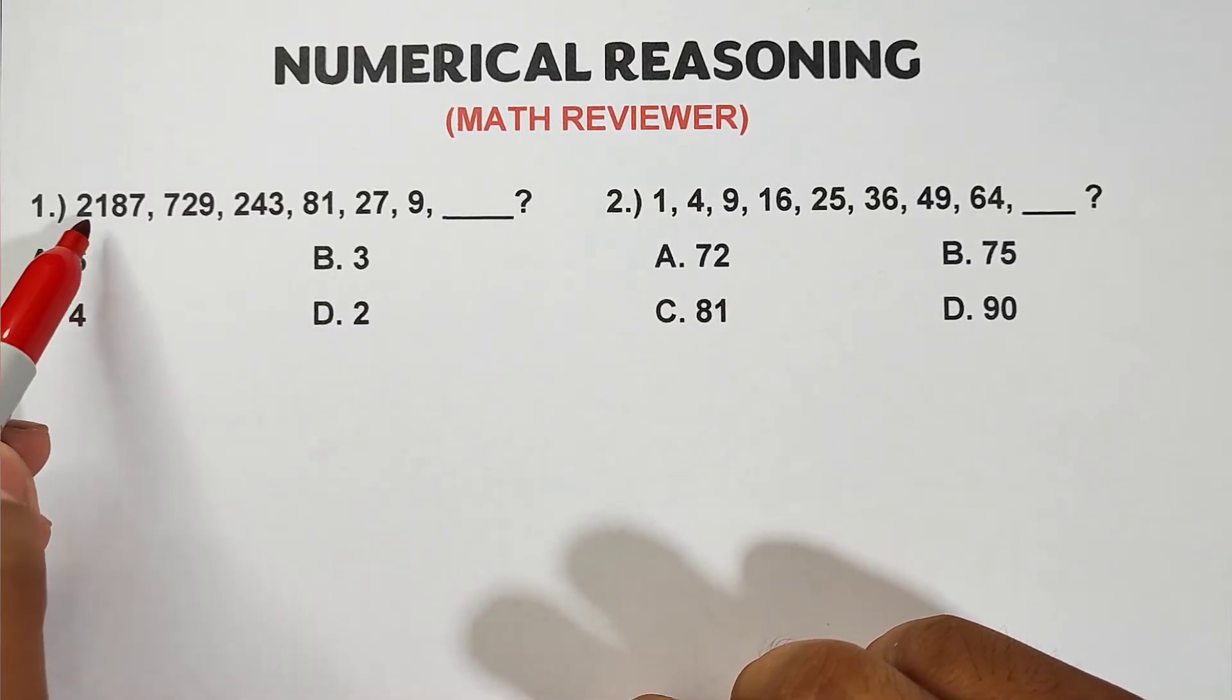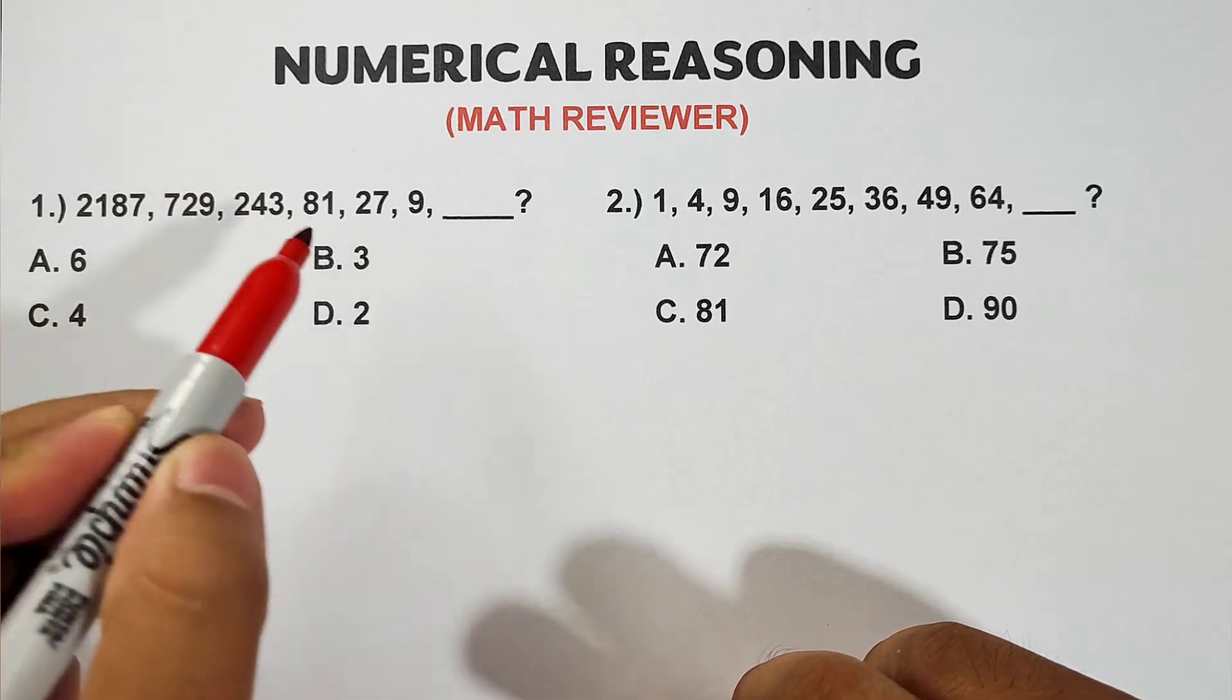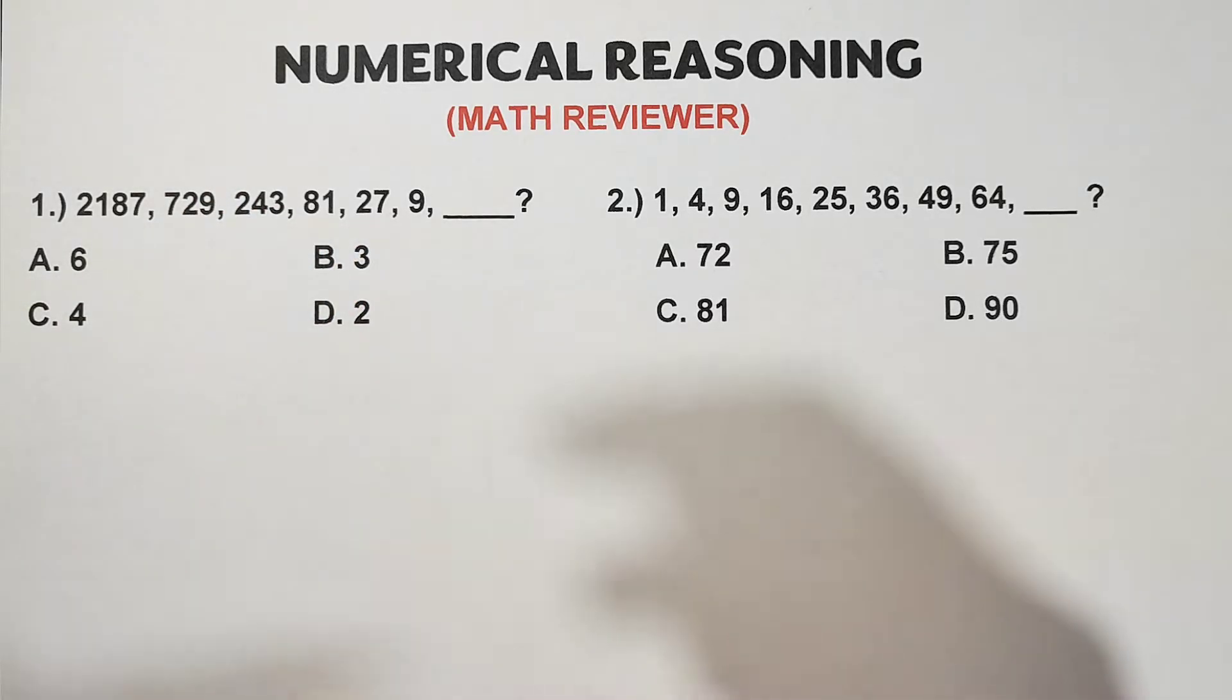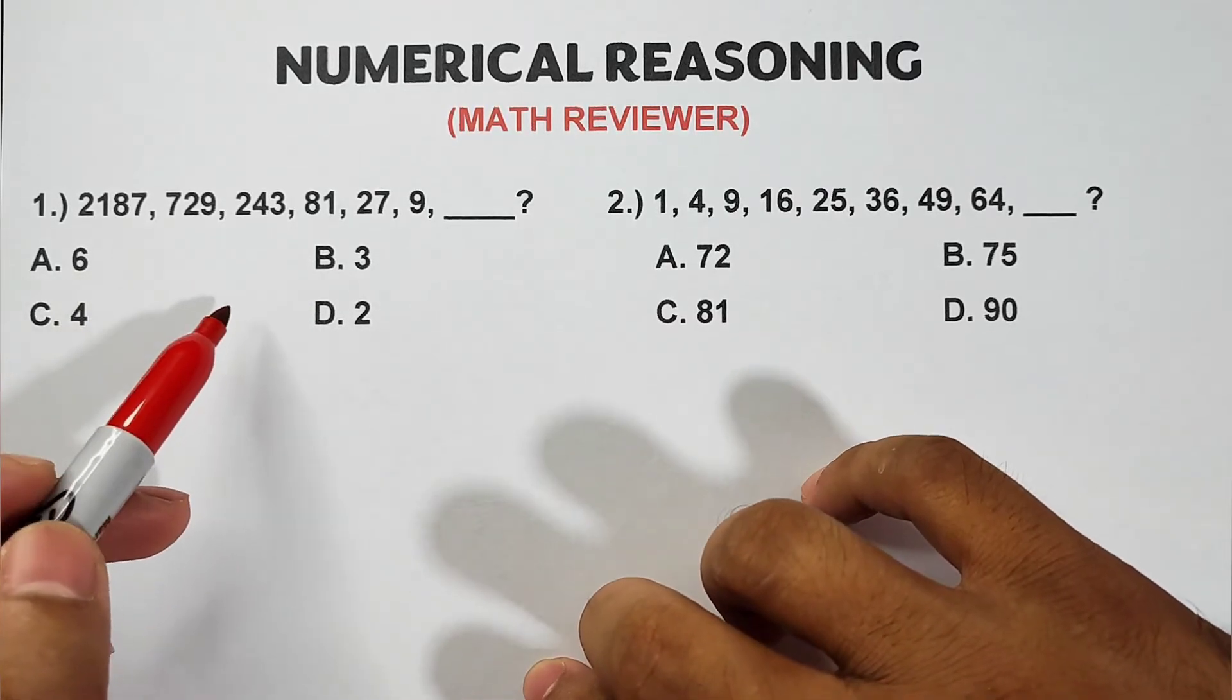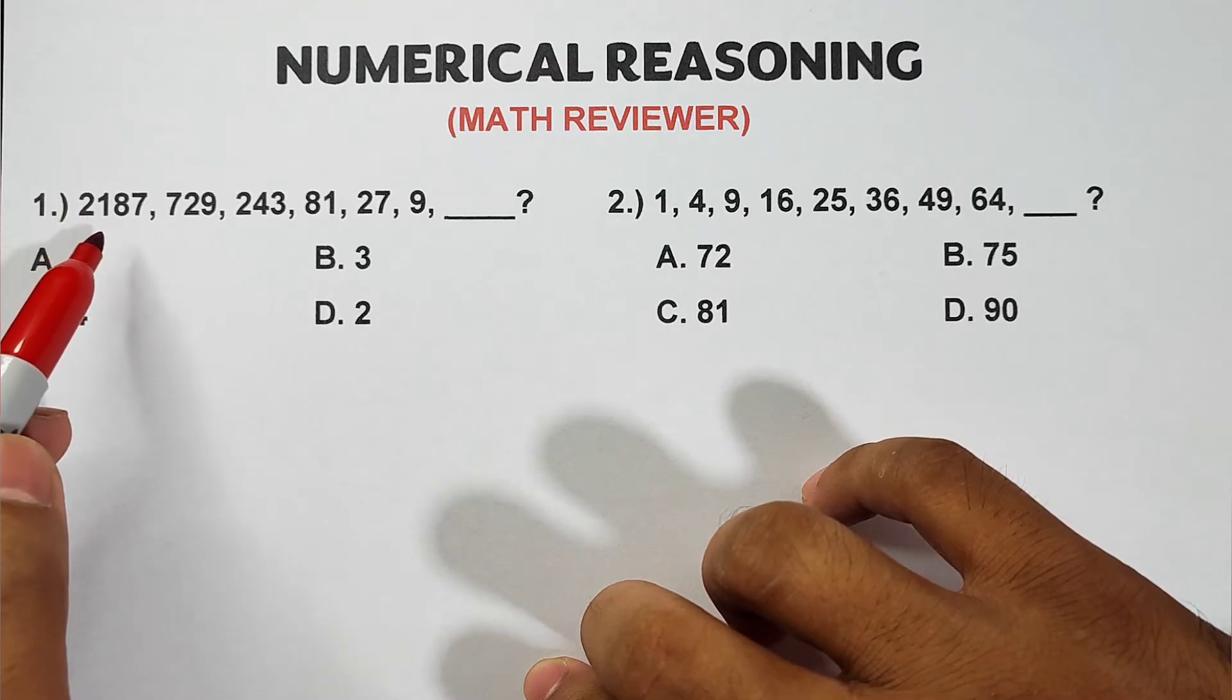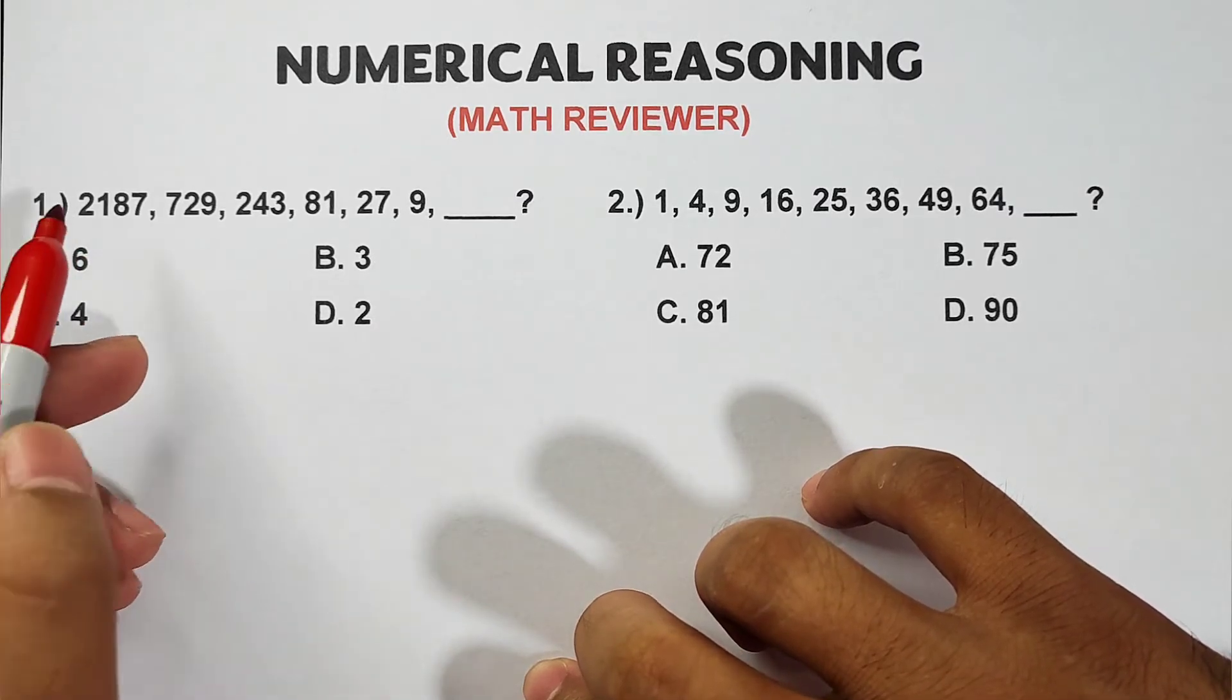Let's try number one. We are given this number series: 2187, 729, 243, 81, 27, and 9. Basically guys, in number series it's best if you know the different types of numbers like whole numbers, odd numbers, even numbers, perfect squares, perfect cubes, and other patterns. Because when you're aware of those number patterns or types of numbers, it helps you recognize what kind of series is available. In this kind of number series, it's quite difficult because the bigger numbers are at the beginning, unlike other series that start with smaller numbers. So it will be hard for you to think what is the pattern from 2187 to 729 and down.